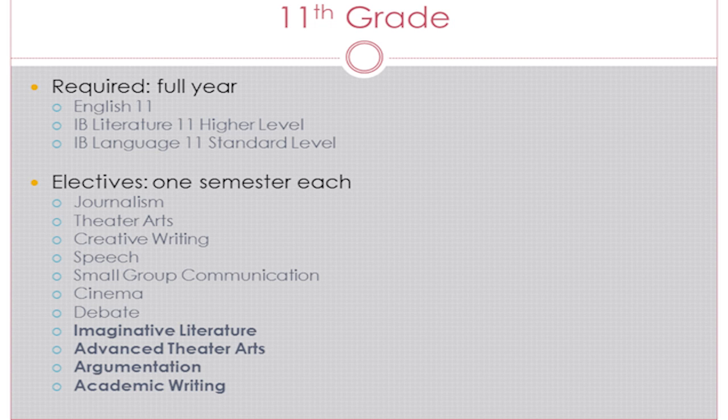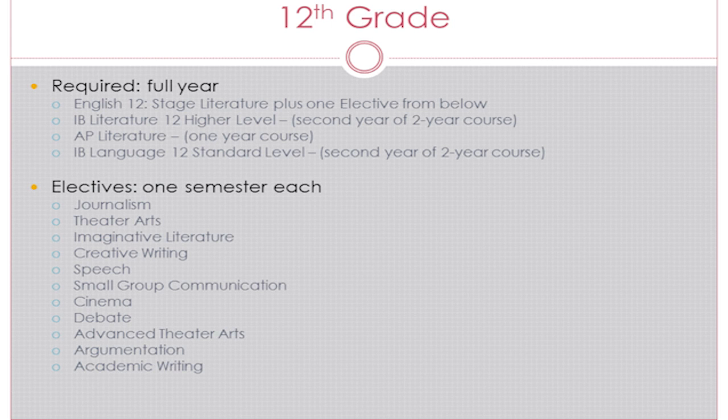If you are registering for 11th grade, you have an additional full-year required course choice: English 11 or one of two IB courses. The first is IB literature 11 at the higher level; the second is IB language 11 at the standard level. These are two-year-long courses and require you to register for them in both 11th and 12th grade. There are also many additional semester electives, including imaginative literature, advanced theater arts, argumentation, and academic writing.